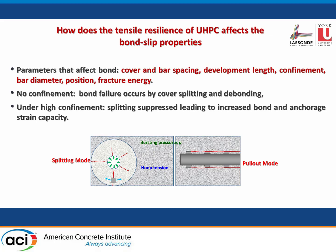Confinement is a critical parameter that affects bond. In the absence of any confinement, we have bond failure occurring by cover splitting. But we know that we can change this mode of failure to pull-out by the addition of significant cover, confinement, enhanced development length, reduced bar diameter, and enhanced fracture energy of concrete. Many of these parameters are reflected through the tensile resilience of UHPC.